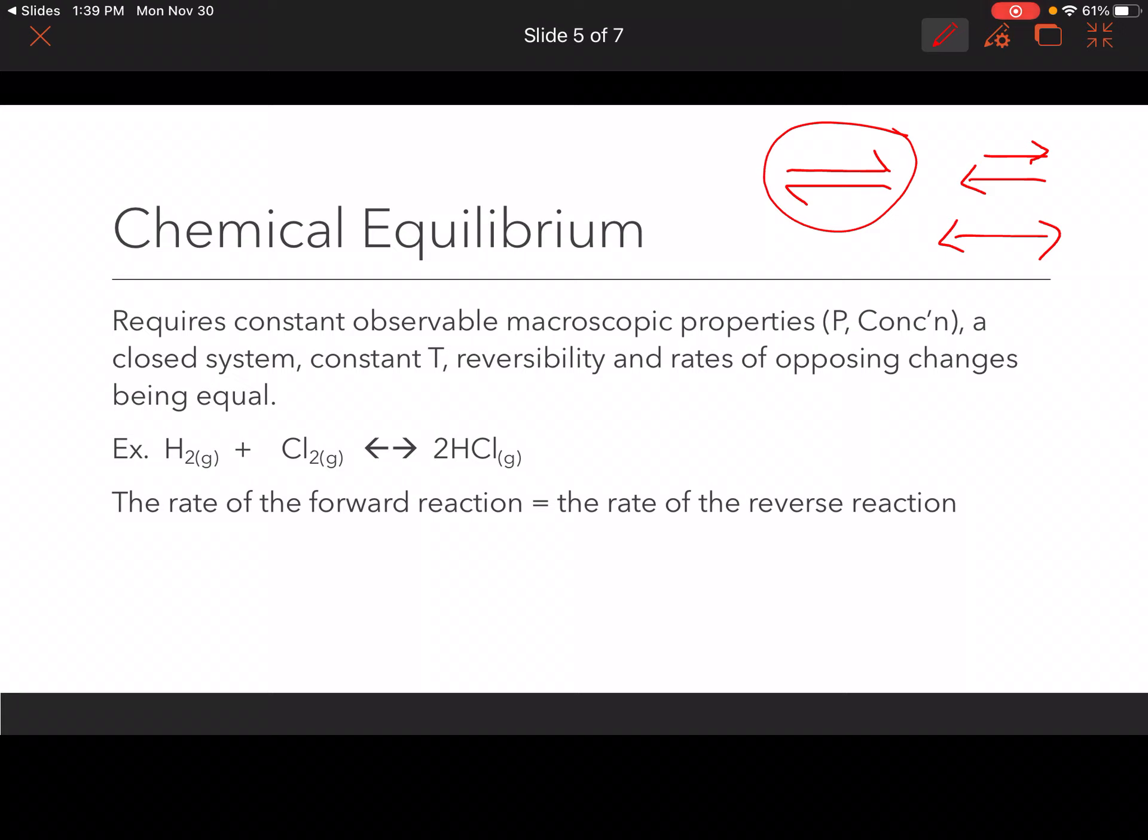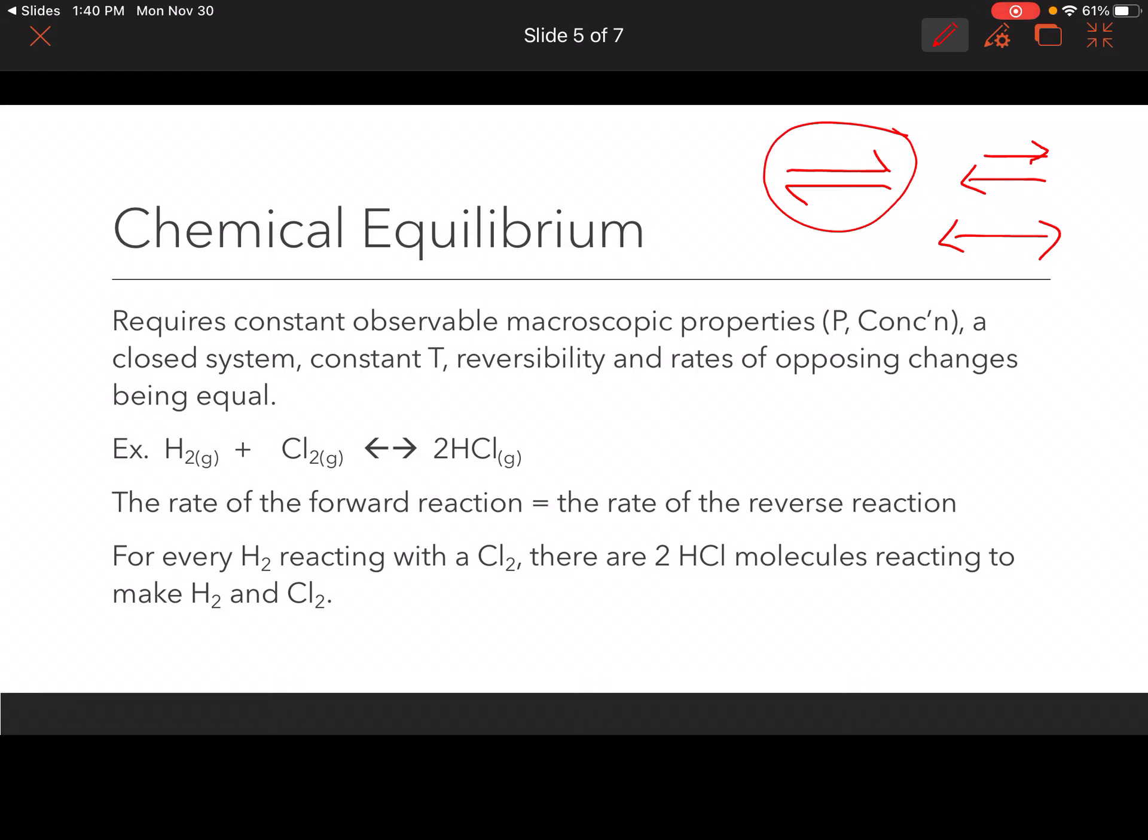So in this particular reaction, then the rate of the forward reactions, this would be the hydrogen and the chlorine reacting together is going to be equal to the rate of the reverse reaction. This would be the HCl decomposing into the hydrogen and chlorine. And so we would say there for every H2 reacting with a chlorine, there are two hydrochloric acid molecules reacting to make H2 and Cl2. So you just need to remember that as the forward reaction is happening, the reverse reaction is also happening. So we've got this equilibrium occurring between the forward and the reverse reactions.